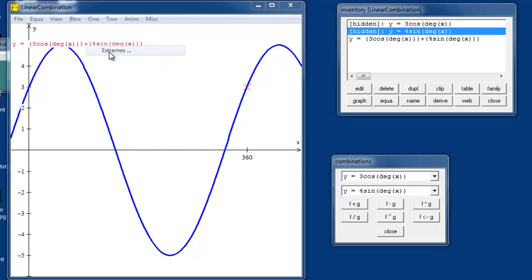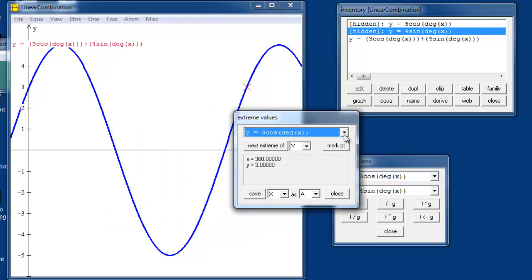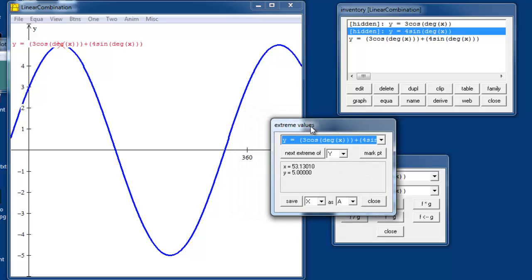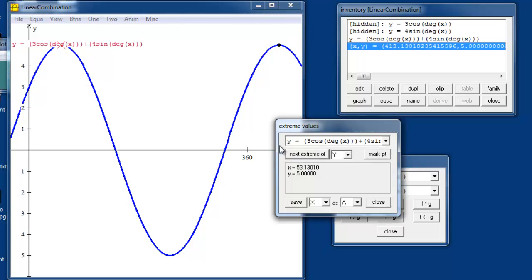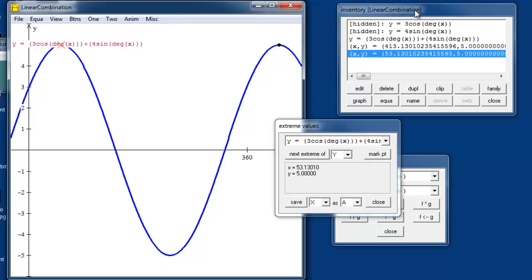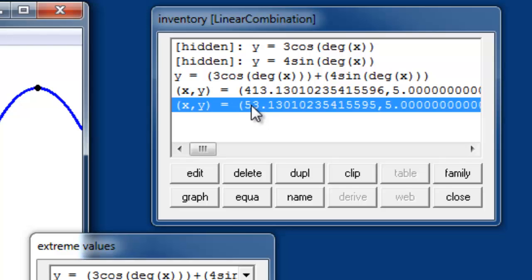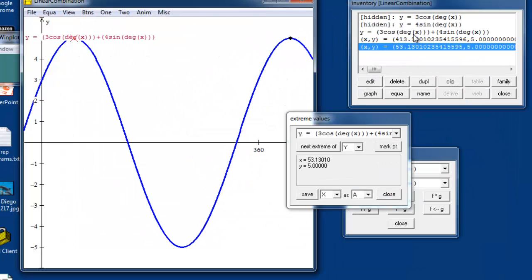And we can analyze it using the tools of WinPlot. Let's look at the extremes here. The first extreme occurs at 53 degrees at an amplitude of 5 units, right up here. Our next extreme is down here at the bottom at negative 5 for y and 233.13 degrees for x. And our next extreme is at 413 degrees here. Let's mark that point and let's mark the original high point. If we look over here, we can see that we have an extreme at 53 degrees and another extreme at 413 degrees, exactly 360 degrees apart.